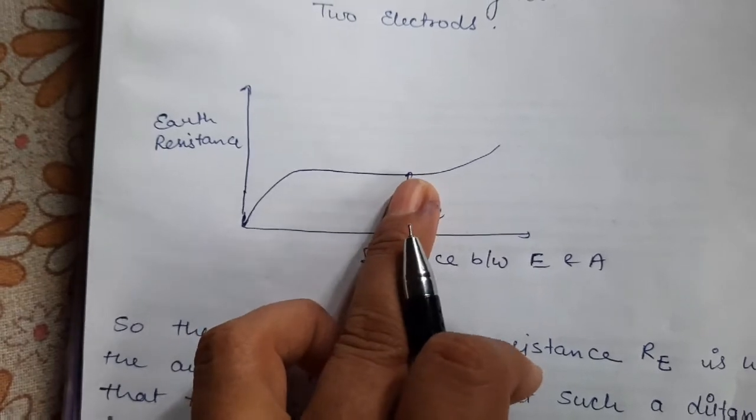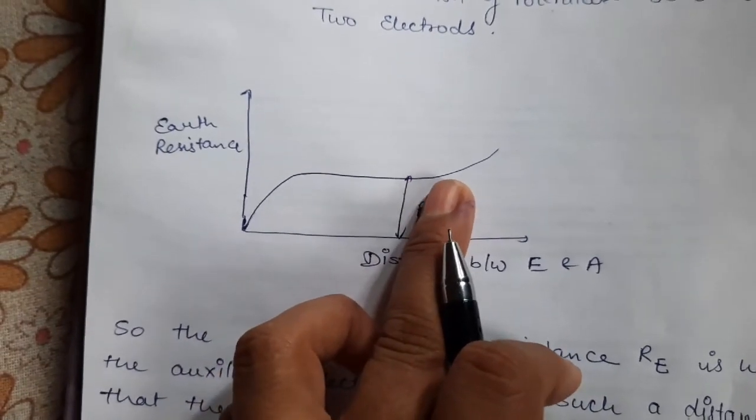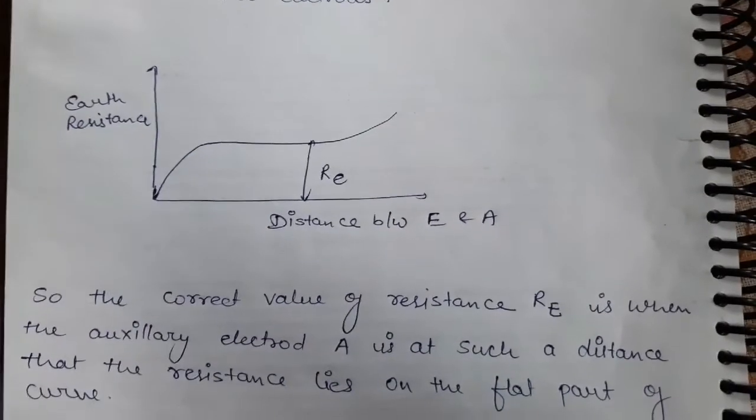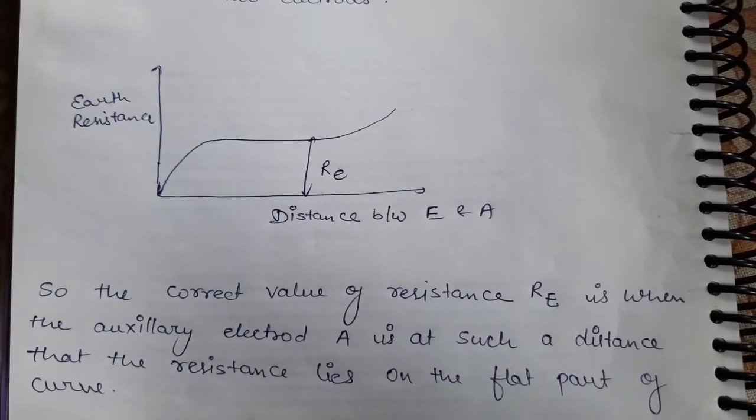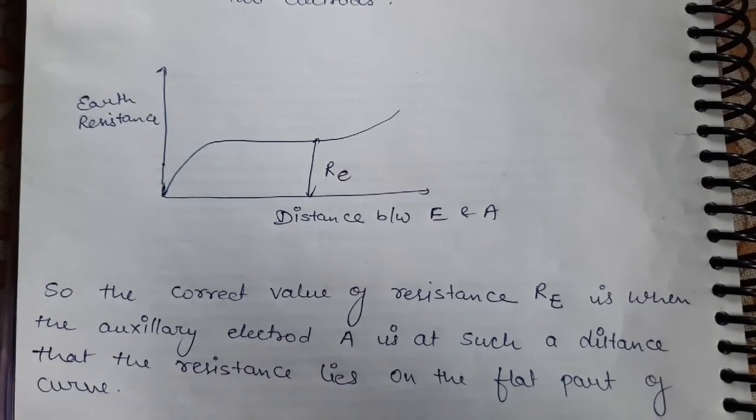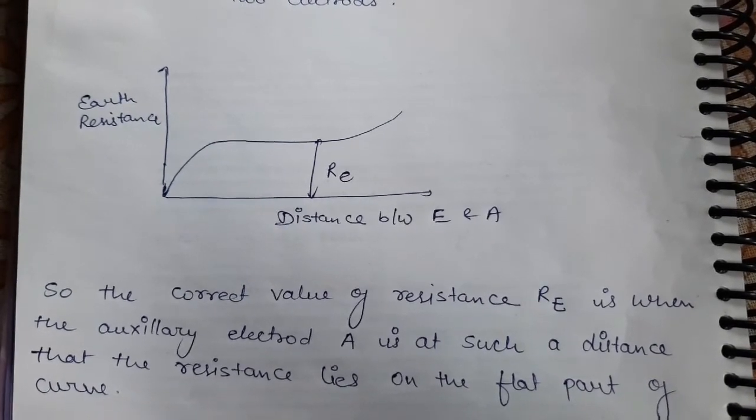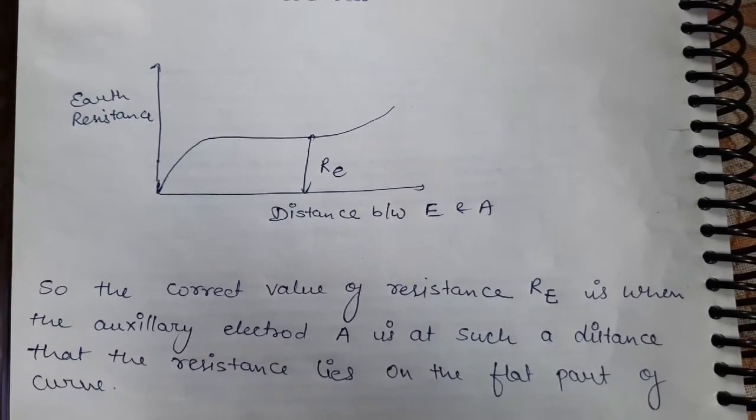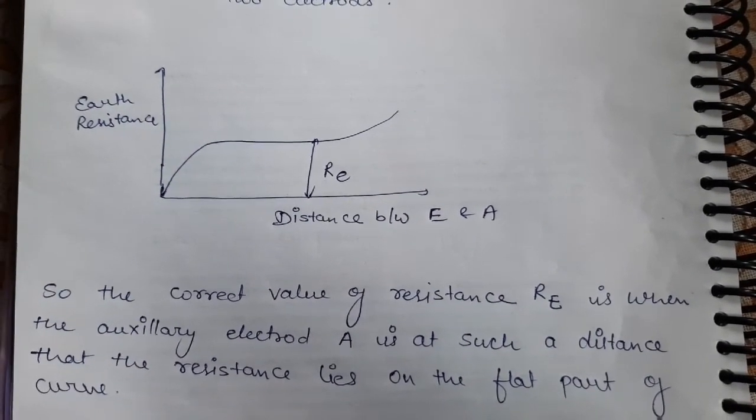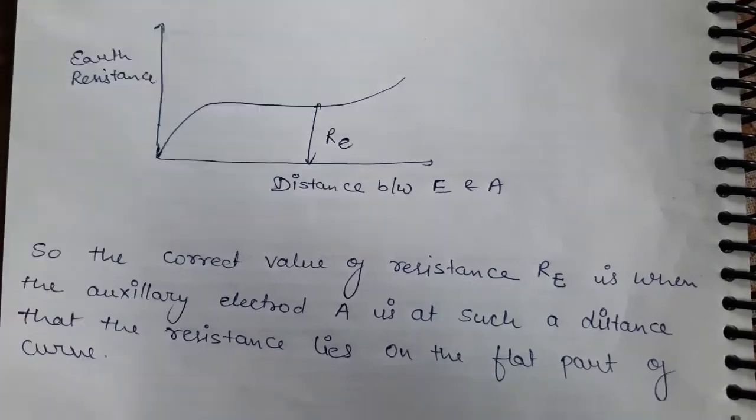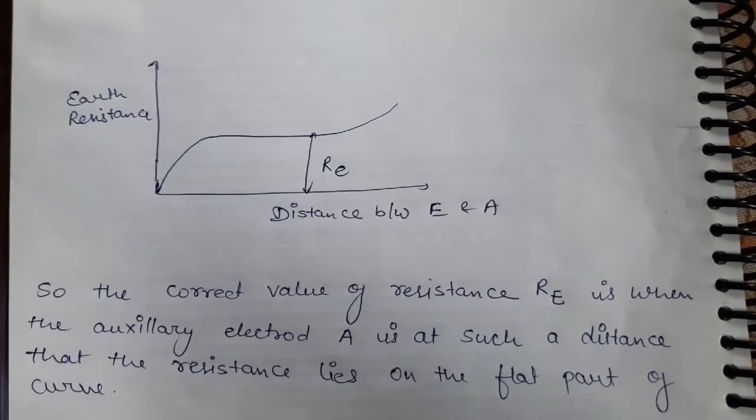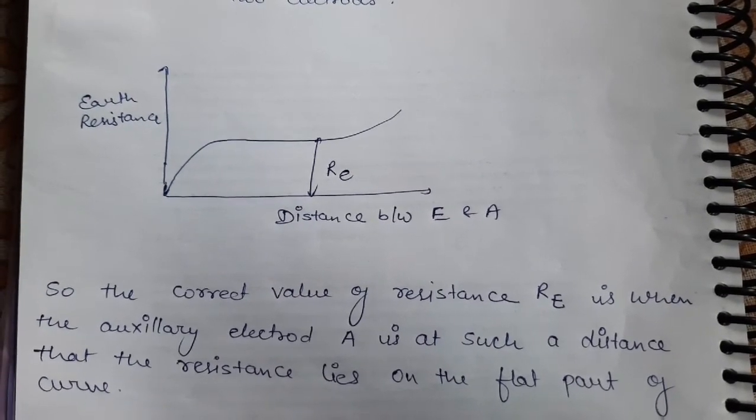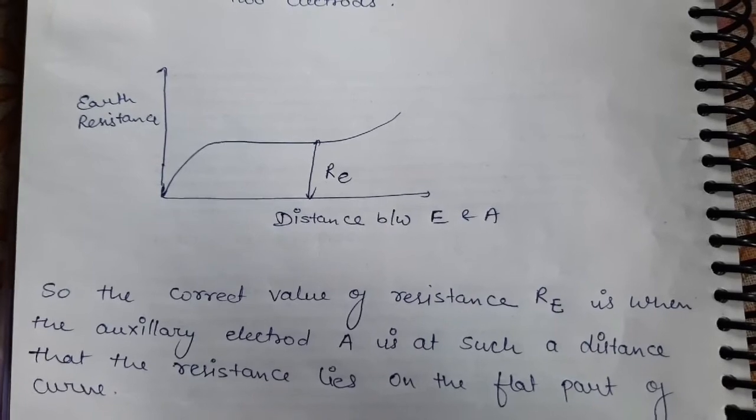The correct placing of the auxiliary electrode is important. If placing is not correct, there will be an error in this method. The correct value of resistance RE is when auxiliary electrode A is at such a distance that the resistance lies on the flat part of the curve. Near the auxiliary electrode or earth electrode, error will be produced. In the middle part, the earth resistance will be accurate.